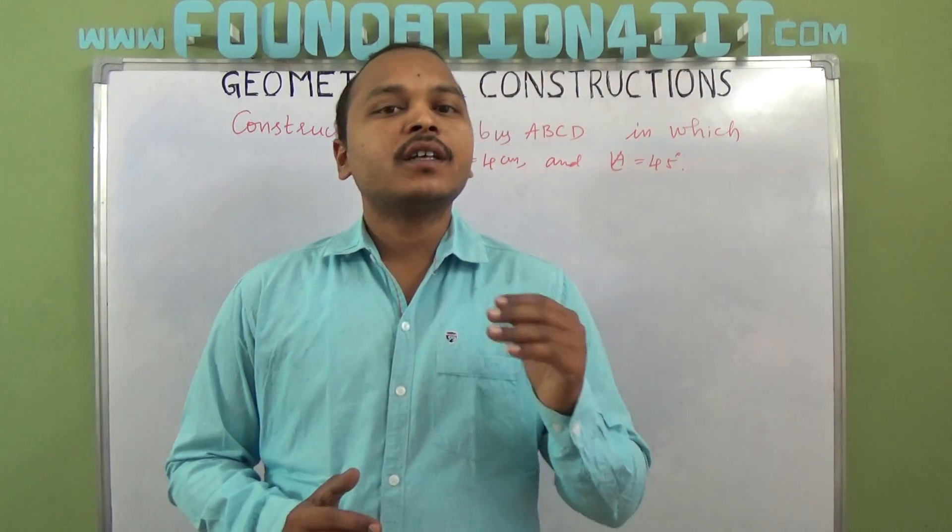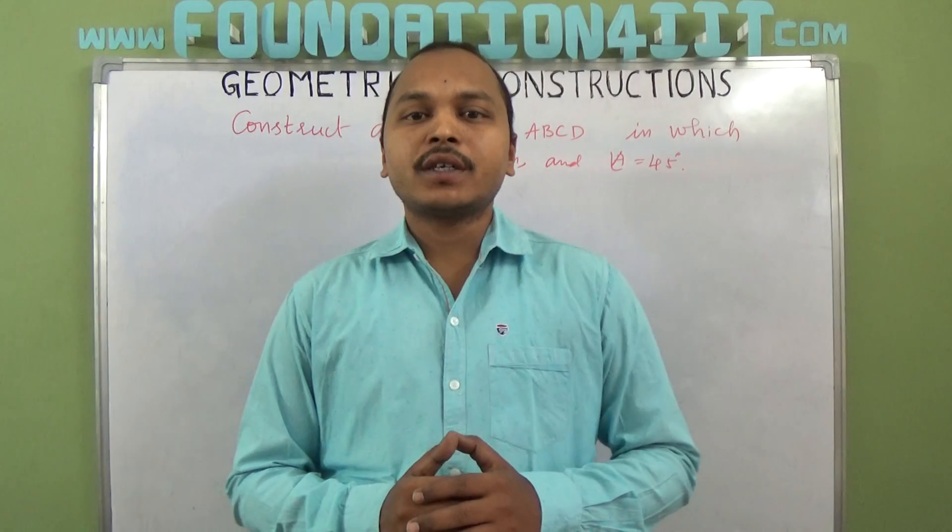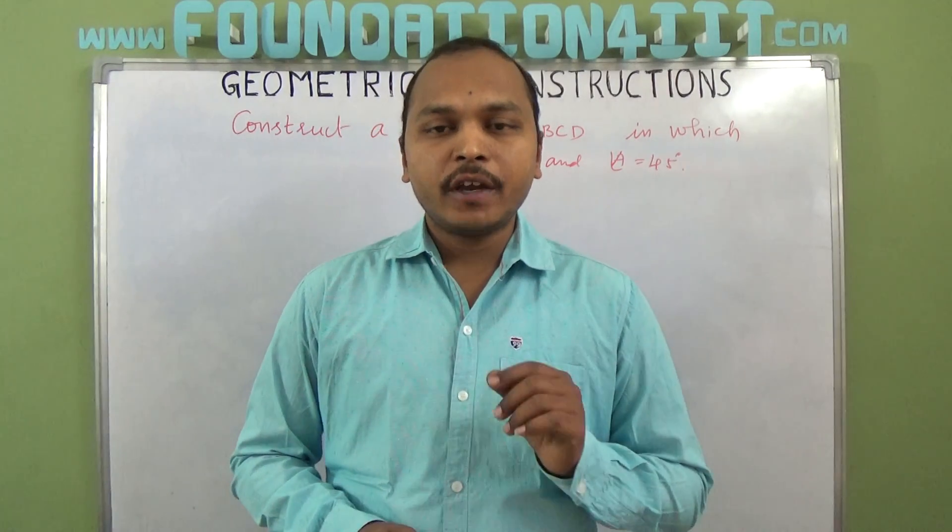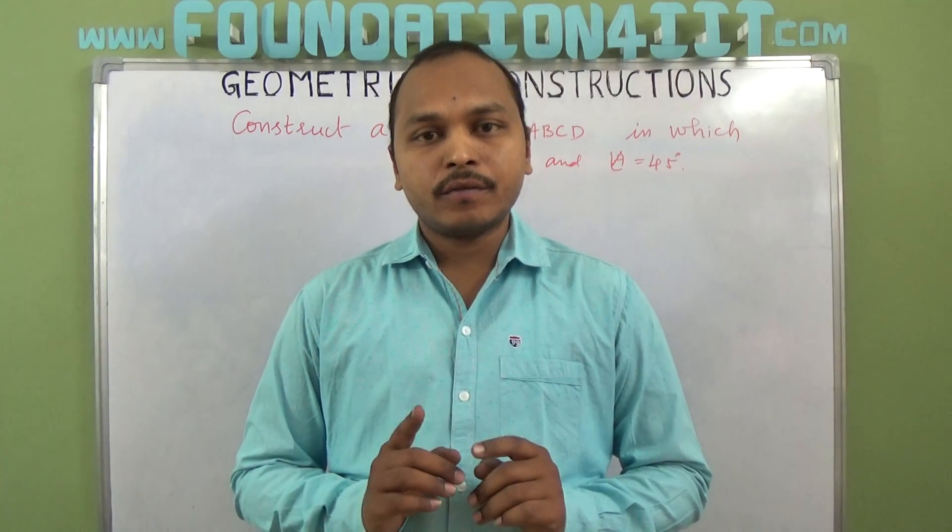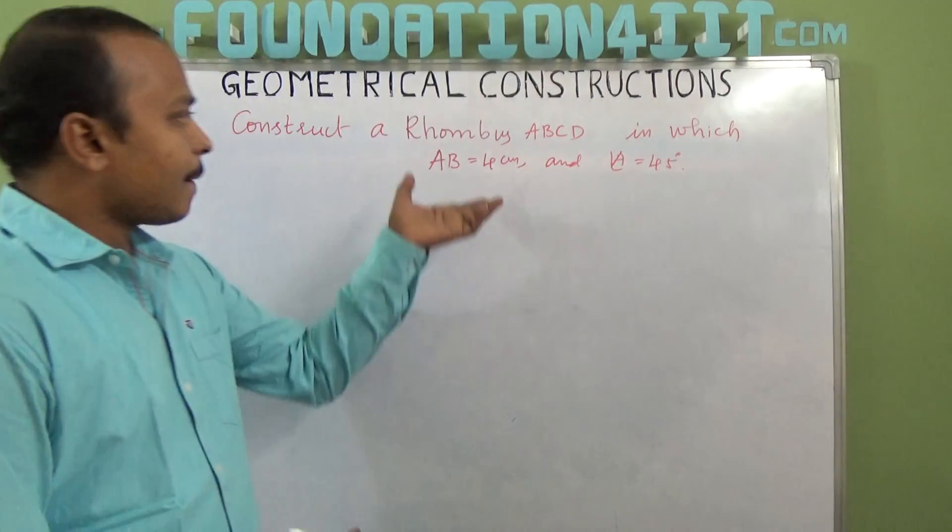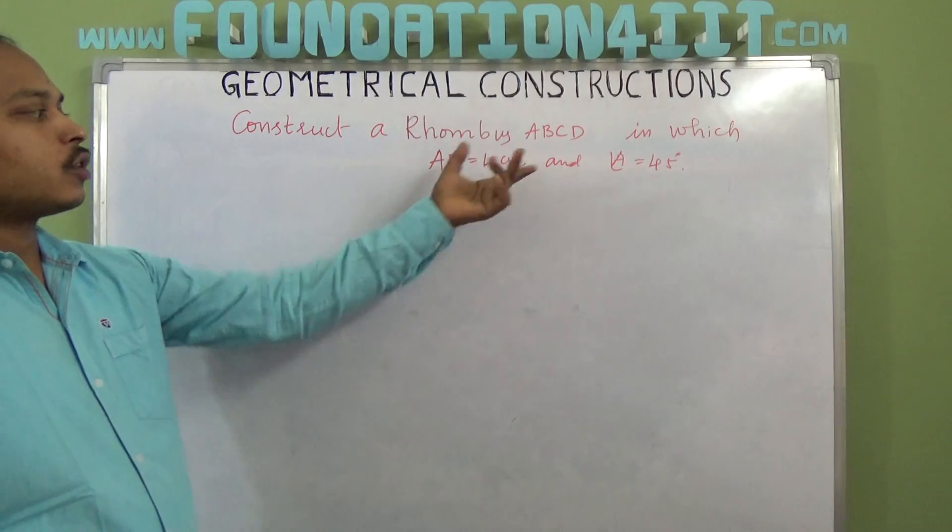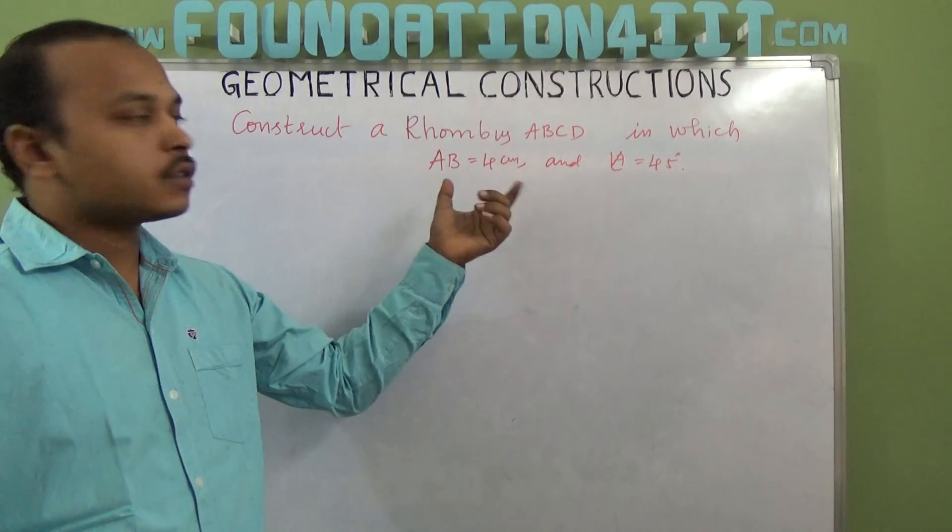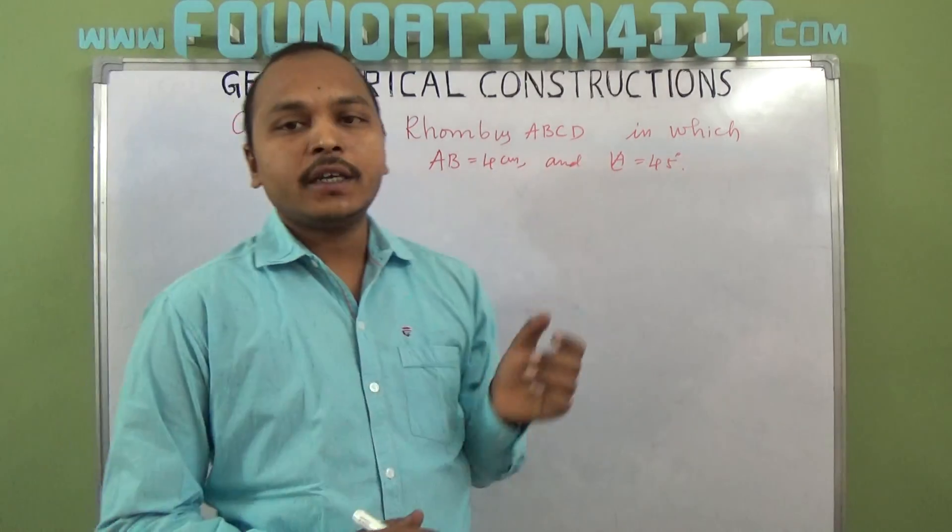Welcome to Educational Channel. In this video I am going to explain how to construct a rhombus when one side and one angle are given. See our question: construct rhombus ABCD where AB equals 4 centimeters, so one side is given, and one angle is 45 degrees.